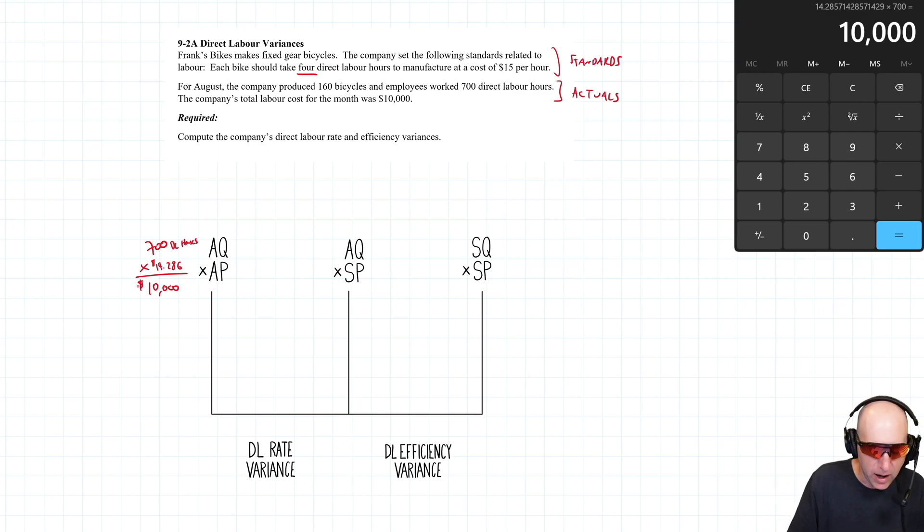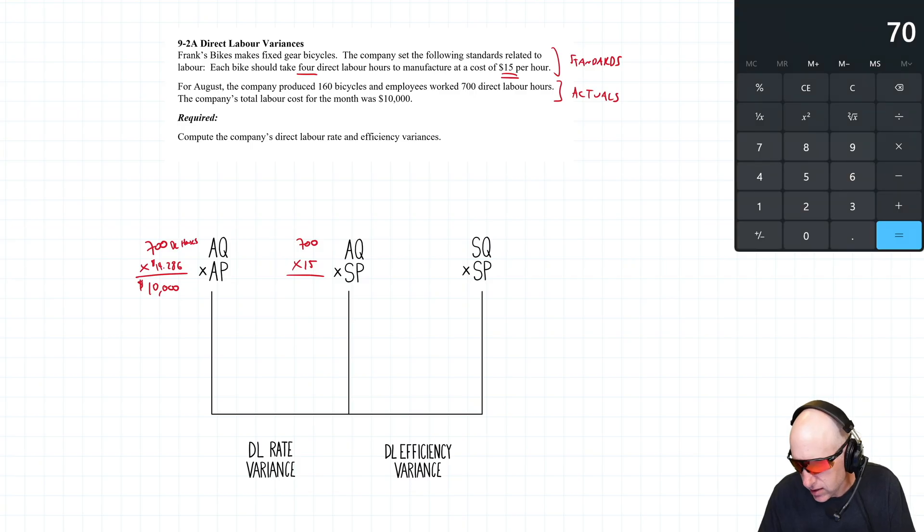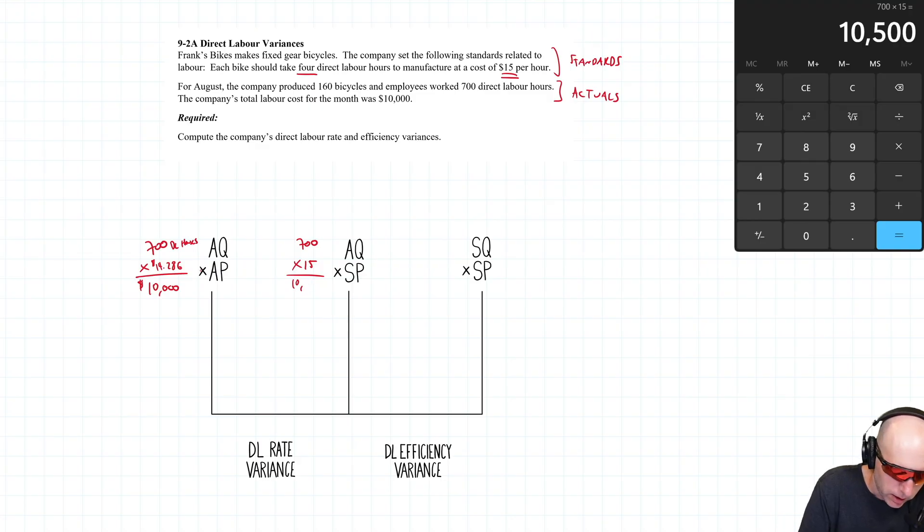AQ×SP: take 700 hours and multiply by the standard price per hour of labor, which is $15. 700 × 15 = $10,500. This is the per-hour rate, so 700 × 15 = $10,500.